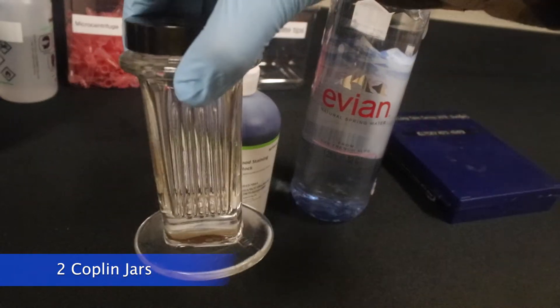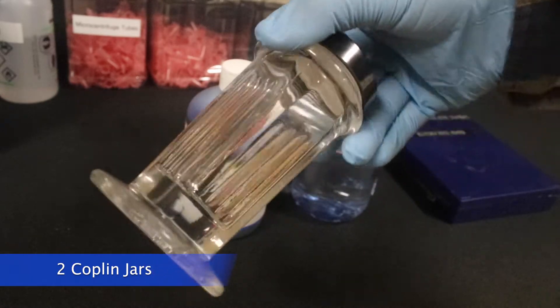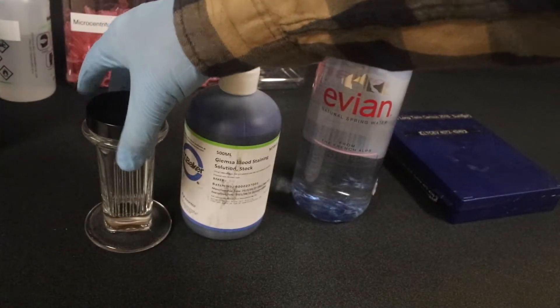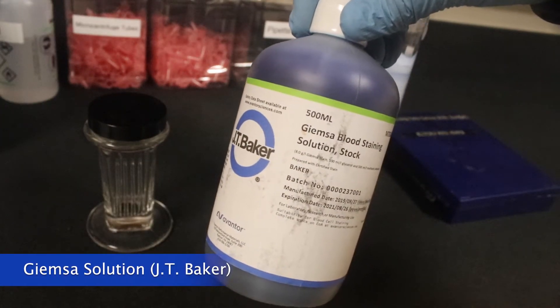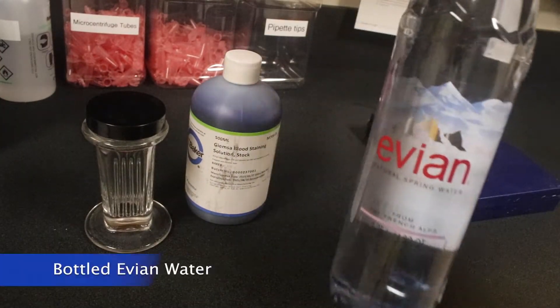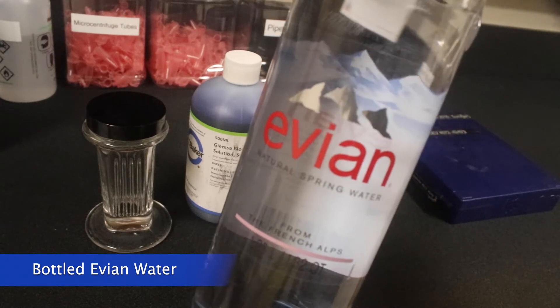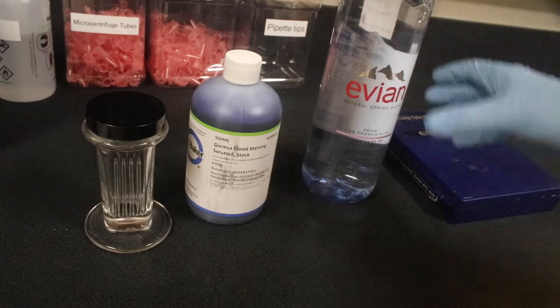One is going to be for the slides while they stain, and another is going to be to rinse off the stained slides. Then there's the Yamsa stain solution, and we're going to need this small bottle, not the taller one that we may have in the cabinet. Then we use Evian water as our buffer for this solution, and that is because it has just the right pH of 7.